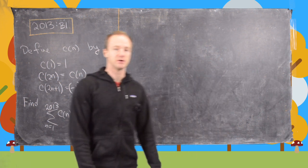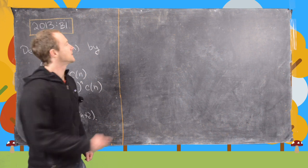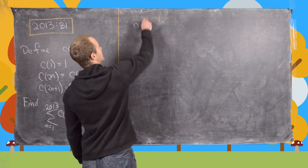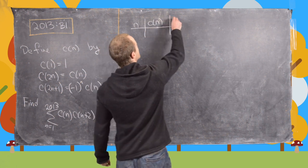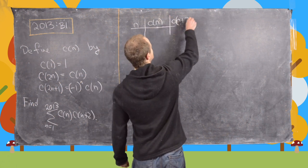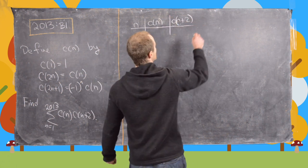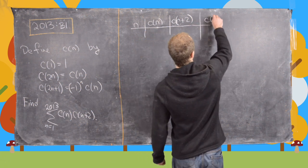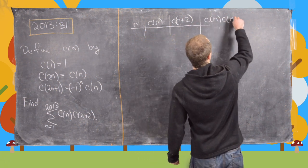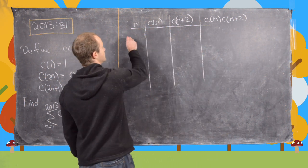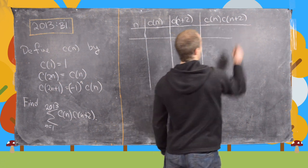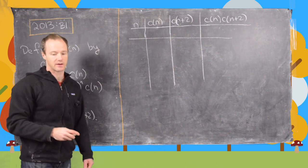So the first thing that we want to do is explore a little bit. Let's make a chart of values of n, c_n, c_(n+2), and then their product c_n times c_(n+2). I think this will give us a good idea of what's going on and how to attack the next step of this problem.